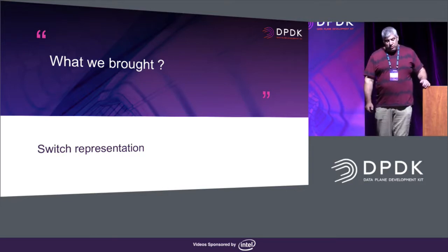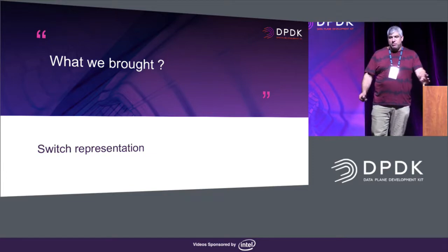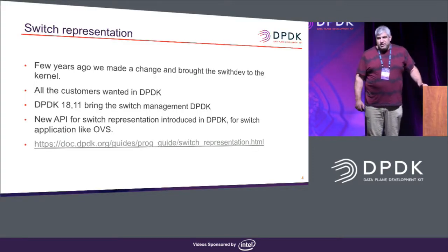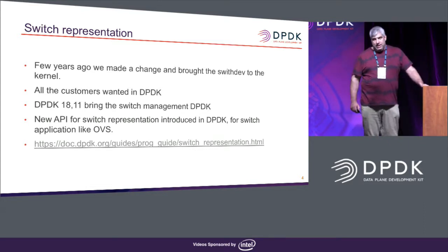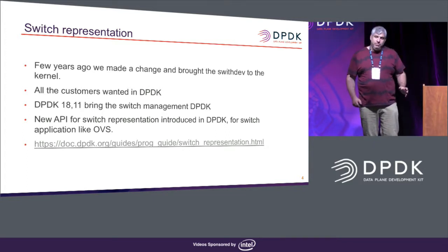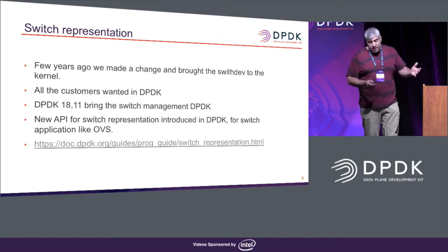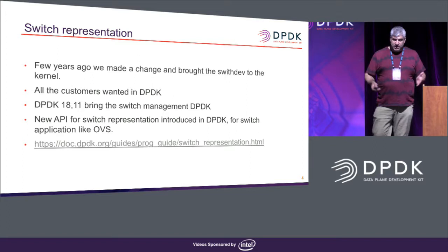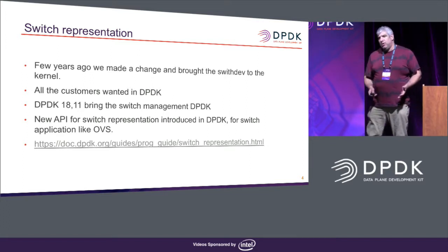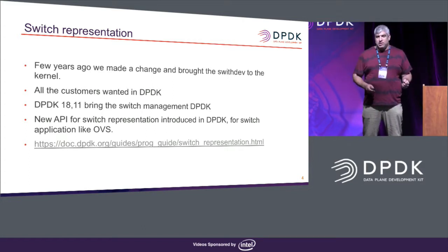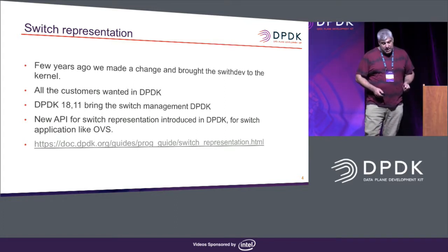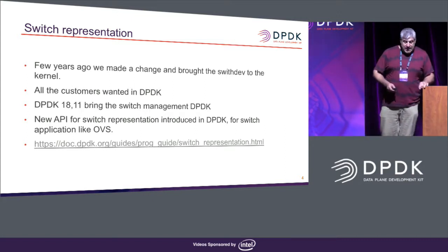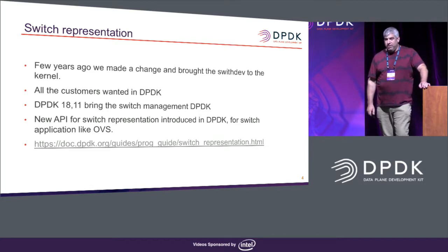What we brought is switch representation to DPDK. A few years ago, roughly three years ago, we started to do it in the kernel. In the kernel it's called the switchdev API. The SR-IOV implementation can be seen by the kernel — we create the orchestration there and we have a full solution that is already upstream. Now customers are saying they want a DPDK application that can run and manage the switch. They don't want to use the kernel APIs for that. So we started working on that, and DPDK 18.11 already supports it.